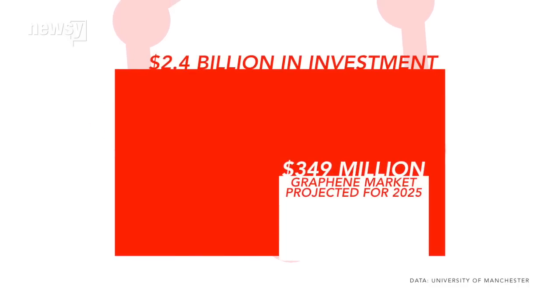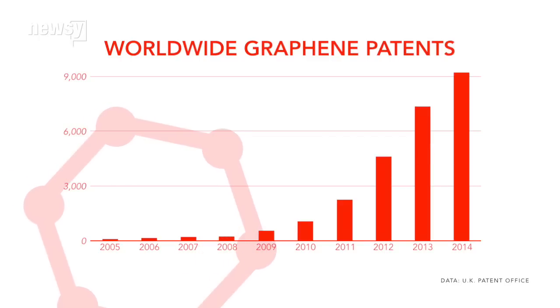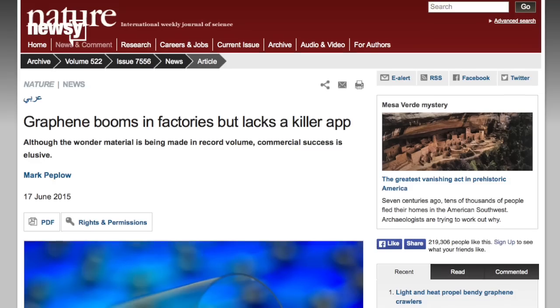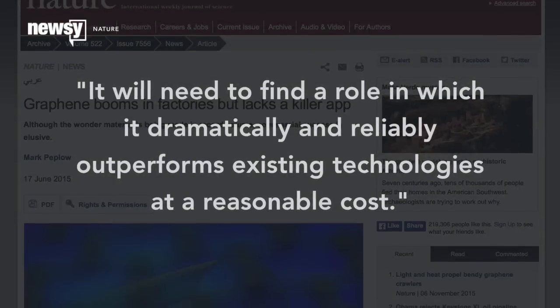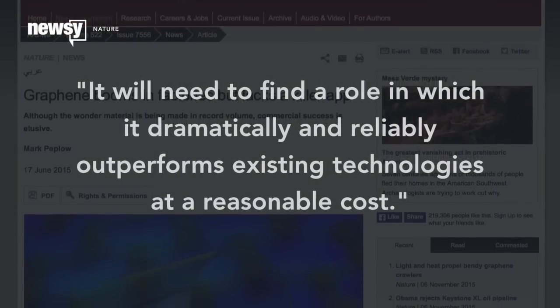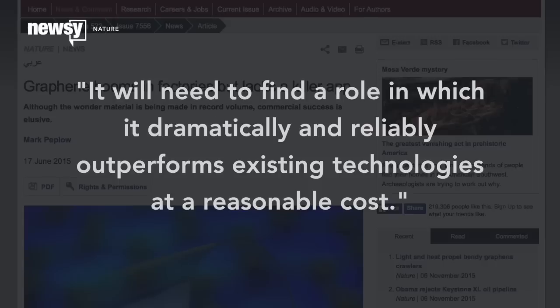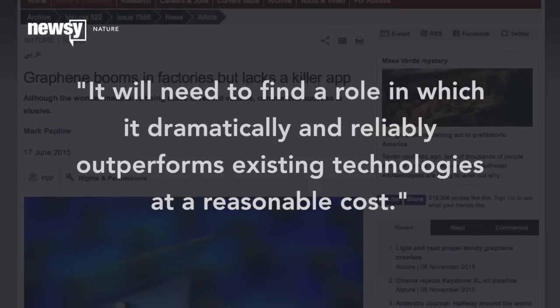That's a lot of tennis rackets. For what it's worth, the UK Patent Office shows graphene patents are increasing at an exponential rate. But for graphene to stick, says one writer at Nature, it will need to find a role in which it dramatically and reliably outperforms existing technologies at a reasonable cost.